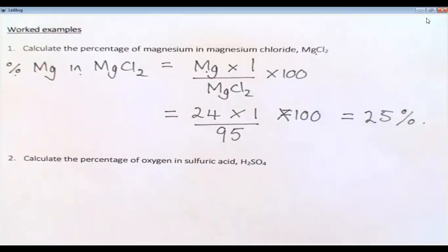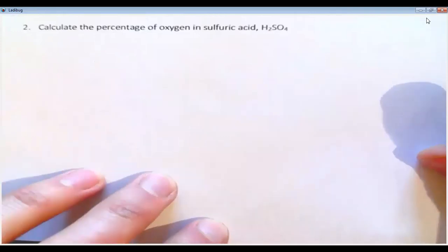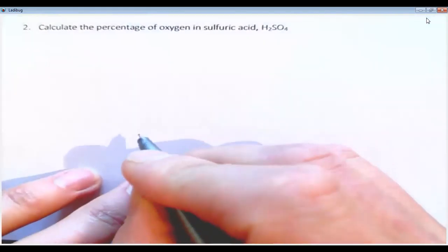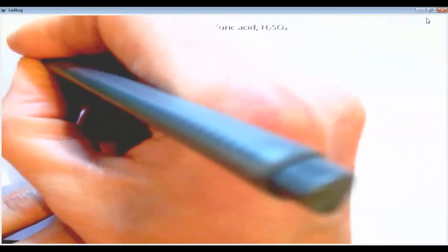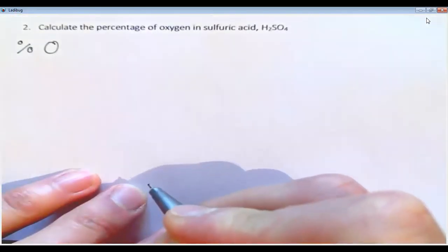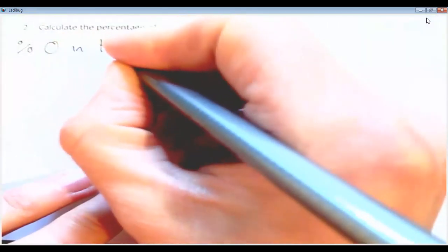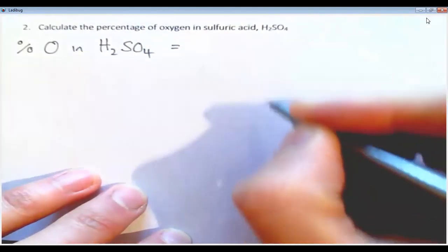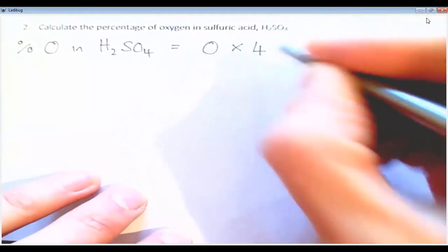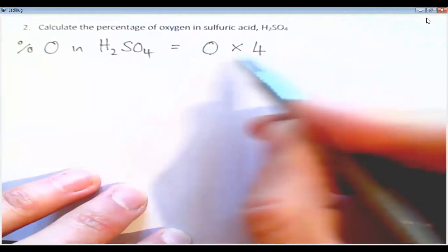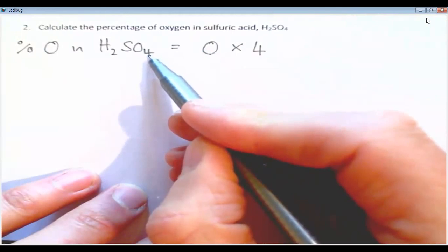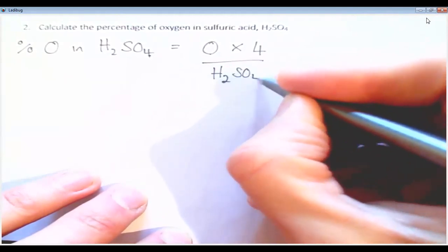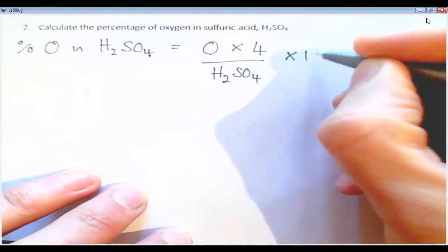Okay, so that's example number one. Let's have a look at example number two. So example number two says calculate the percentage of oxygen in sulfuric acid. So I'm going to write the percentage O, percentage oxygen, percentage of oxygen in H2SO4 equals oxygen times 4, so the mass of oxygen. H2SO4 equals oxygen times 4 because there's a 4 after the oxygen in H2SO4, divided by